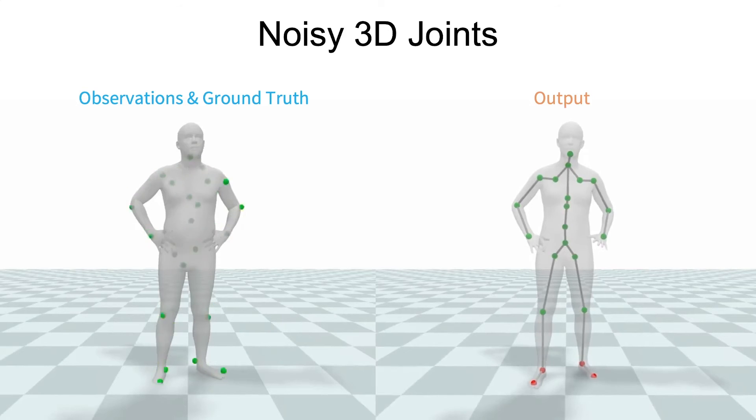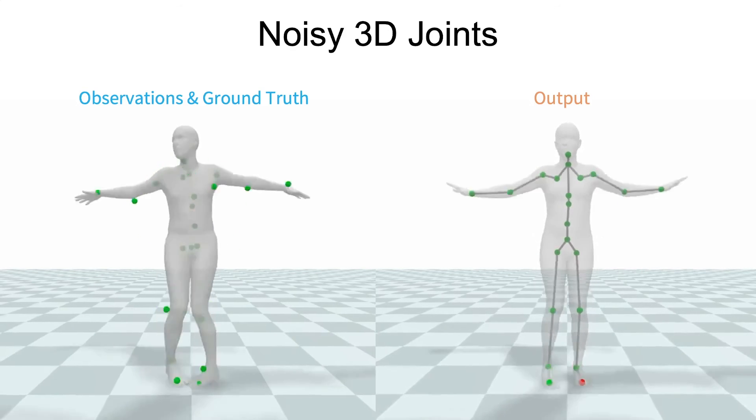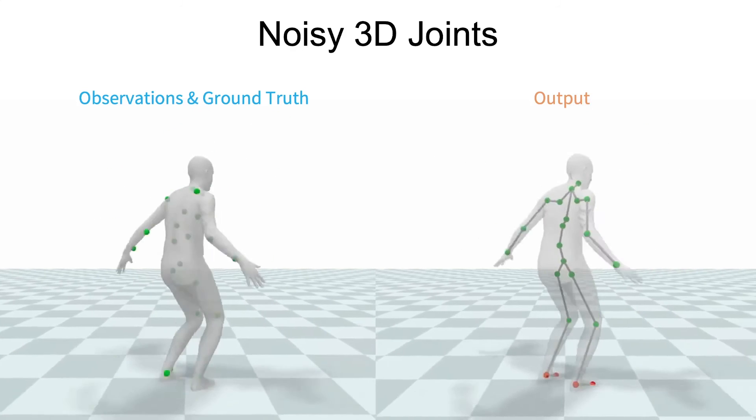By using Humor as a prior, the resulting output motion is denoised but not over-smoothed, since the model can still capture dynamic motions with large accelerations.